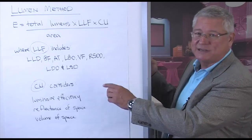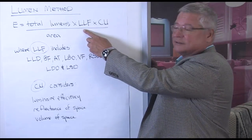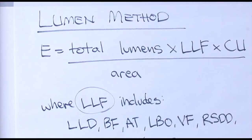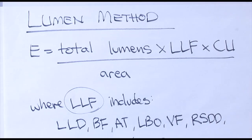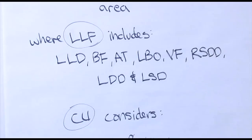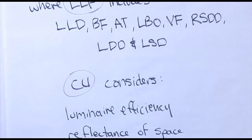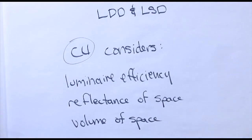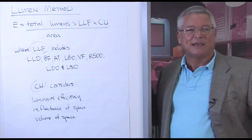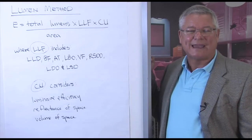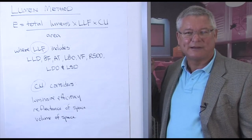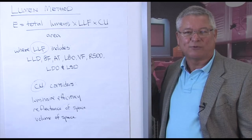Our revised equation is that illuminance equals the total lumens times the light loss factor times the coefficient of utilization — both expressed as percentages — divided by the area of the space. Light loss factors include lamp lumen depreciation and ballast factor, while the coefficient of utilization considers luminaire efficiency, space reflectances, and volume. By putting these numbers into the calculation and accessing them through tables, we use the Lumen method to calculate average expected illuminance — a powerful tool for lighting designers in determining how many luminaires, how to lay them out, and how to provide proper illuminance in the space.